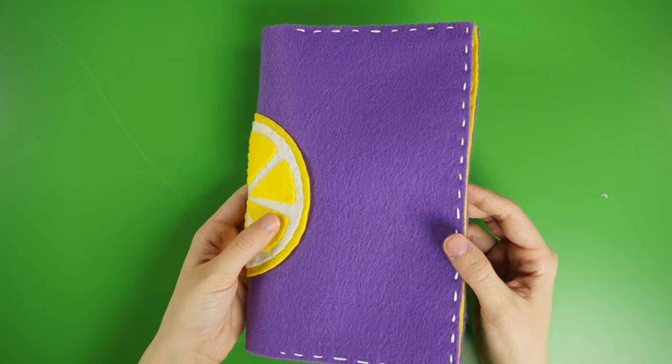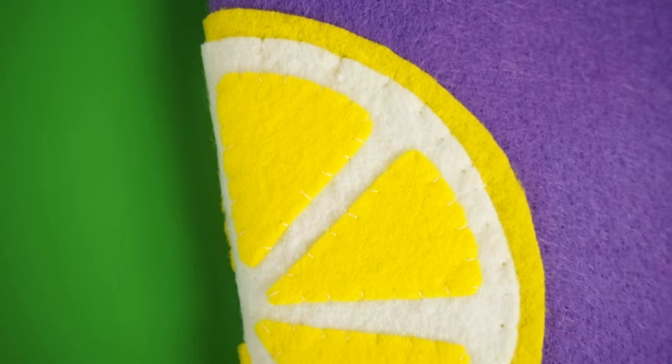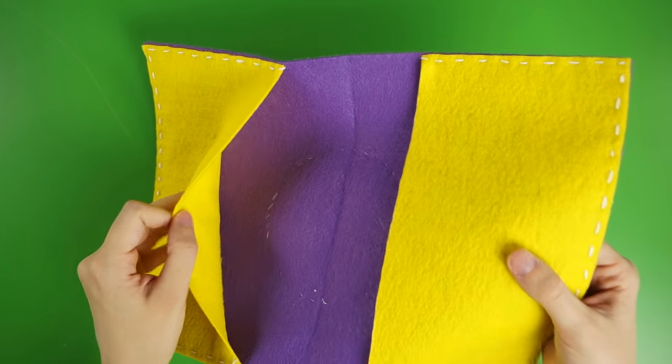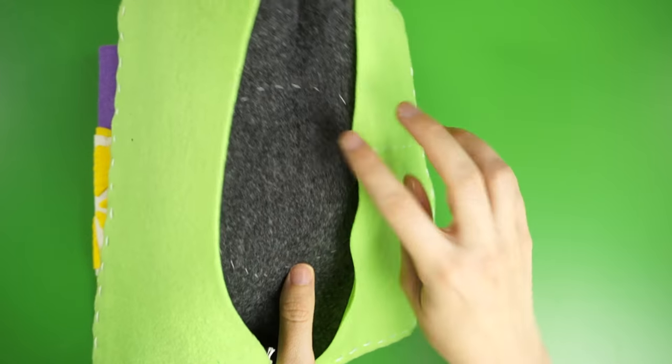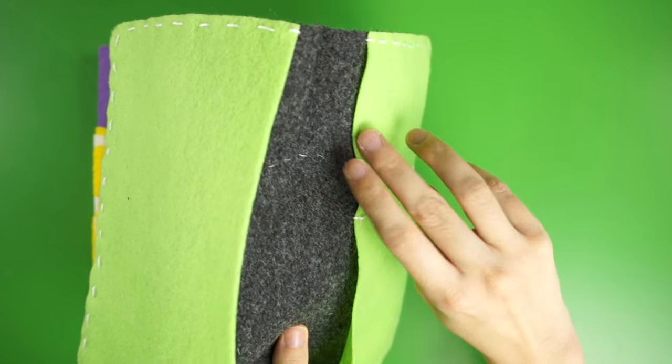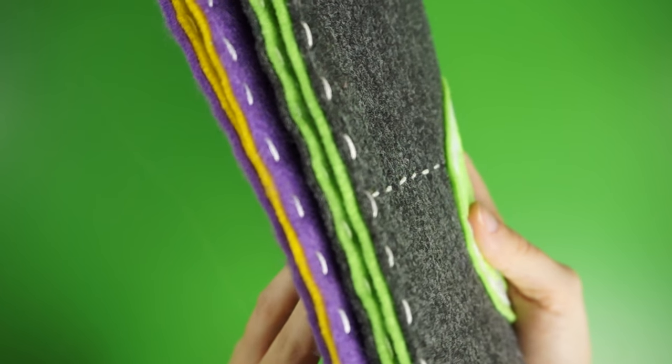This is what it looks like when you're all finished. There are also lots of ways to customize this wallet if you want to. You could embroider designs onto the pockets on the inside before you sew them to the cover, and you could even make the pockets smaller by separating them with another line of stitching like I did here. You're only limited by your imagination.